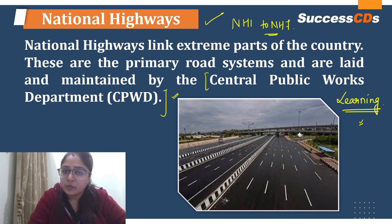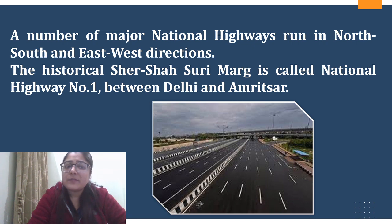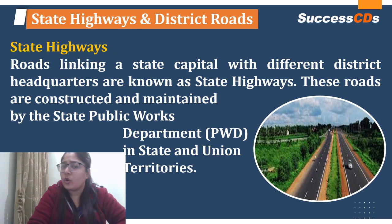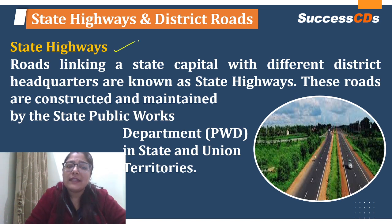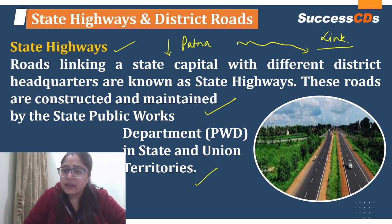NH1 runs between Delhi and Amritsar and is also known as Sher Shah Suri Marg — Sher Shah Suri was the dynasty that defeated Humayun. India has many more National Highways as well. State Highways connect the state capital with different district headquarters; they are constructed and maintained by the State Public Works Department. They are smaller than National Highways.